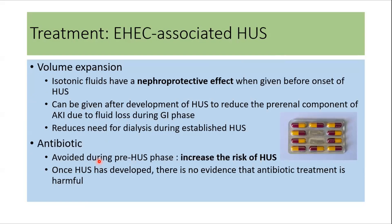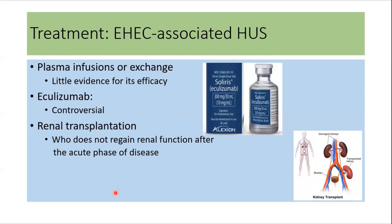For EHEC-associated HUS, volume expansion has a nephroprotective effect when given before the onset of HUS. After HUS has developed, volume expansion can help reduce the pre-renal component of AKI and reduces the need for dialysis. Antibiotics are usually avoided during the pre-HUS phase because they increase the risk of HUS, but once HUS has developed there is no evidence that antibiotic treatment is harmful. Plasma infusion or exchange has little evidence for efficacy in EHEC-associated HUS. Use of eculizumab is controversial but has been shown to be beneficial in some studies. Renal transplantation is required for patients who do not regain renal function after the acute phase.